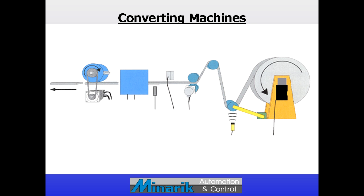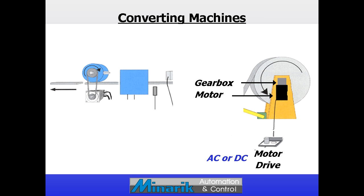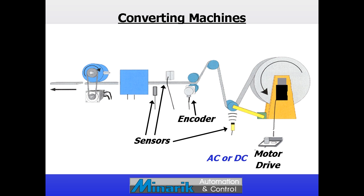Converting machines use a variety of industrial automation technologies. AC or DC motors, drives, and gearboxes may drive an unwind roll. Sensors and encoders can monitor web tension, breakage, alignment, and locate registration marks.